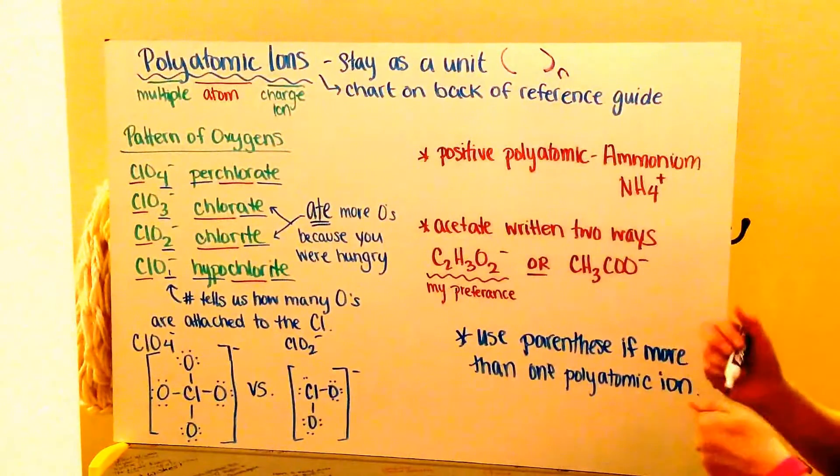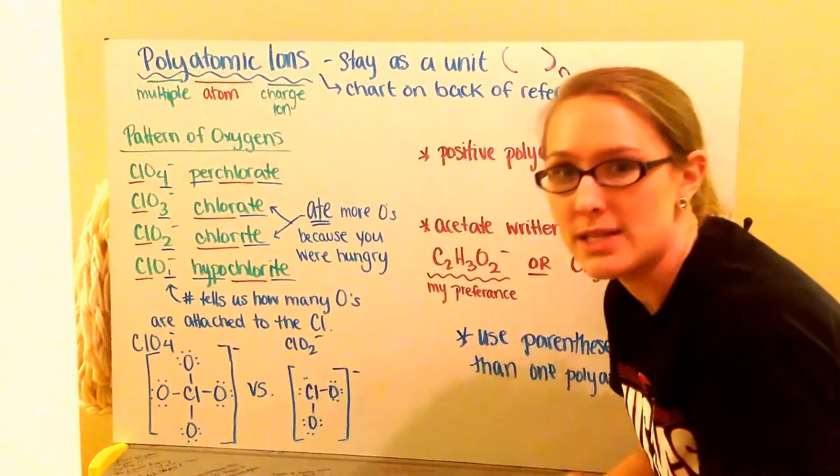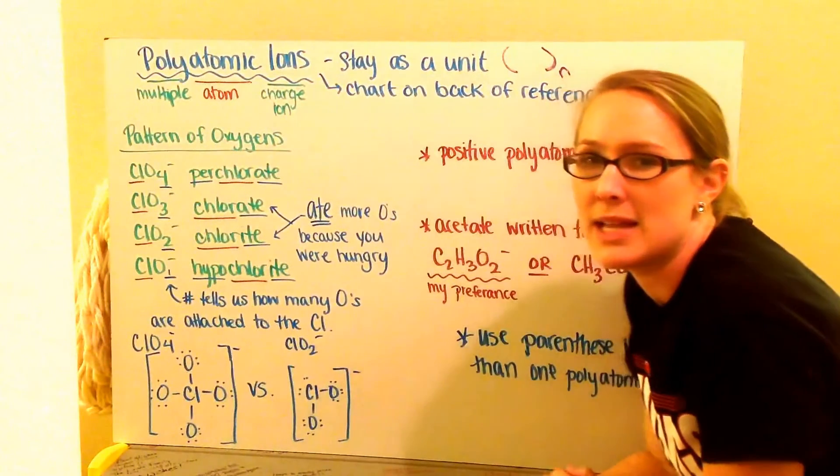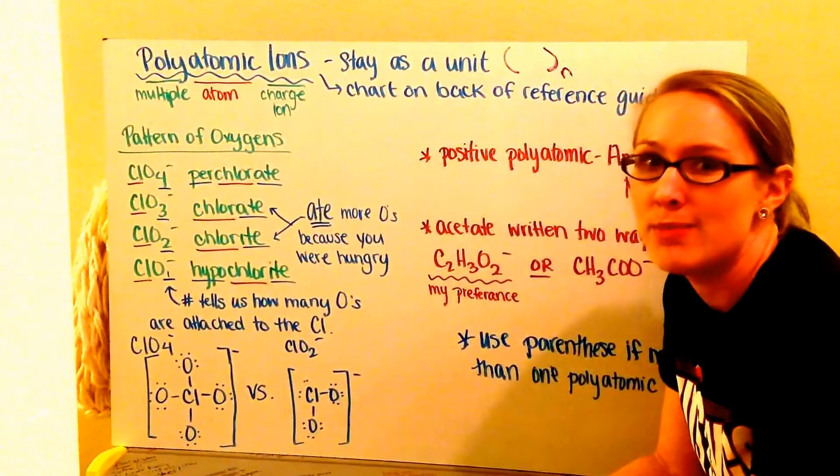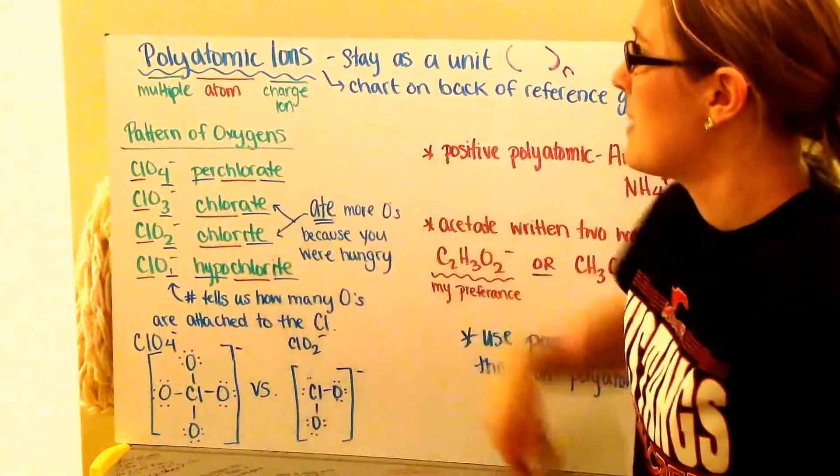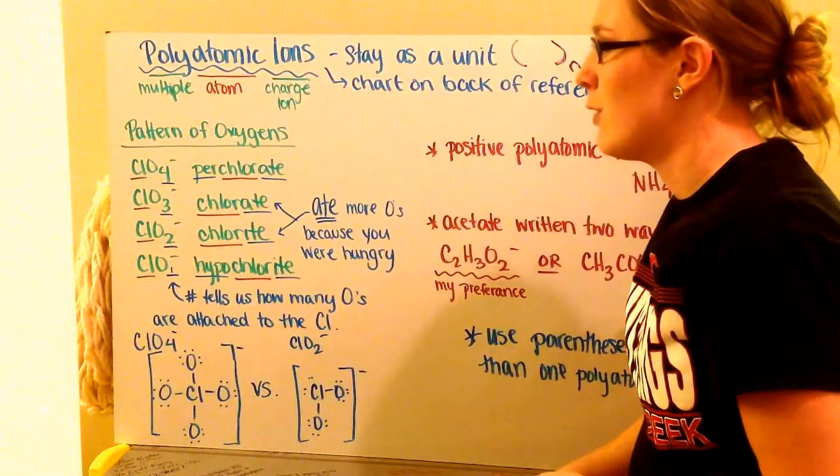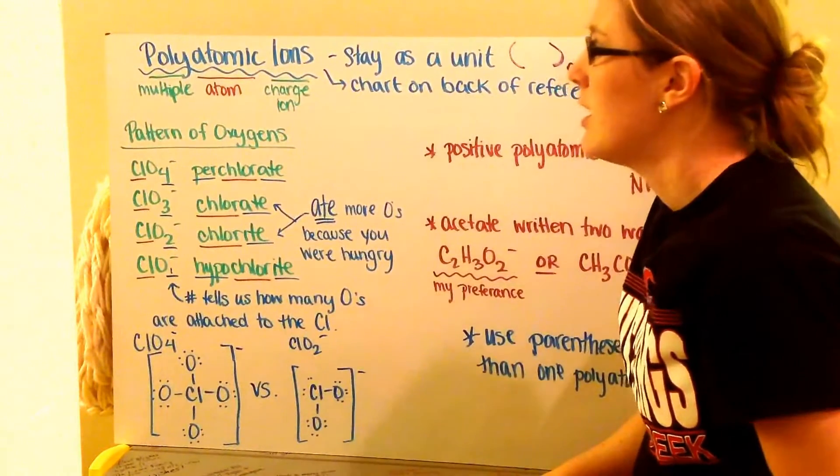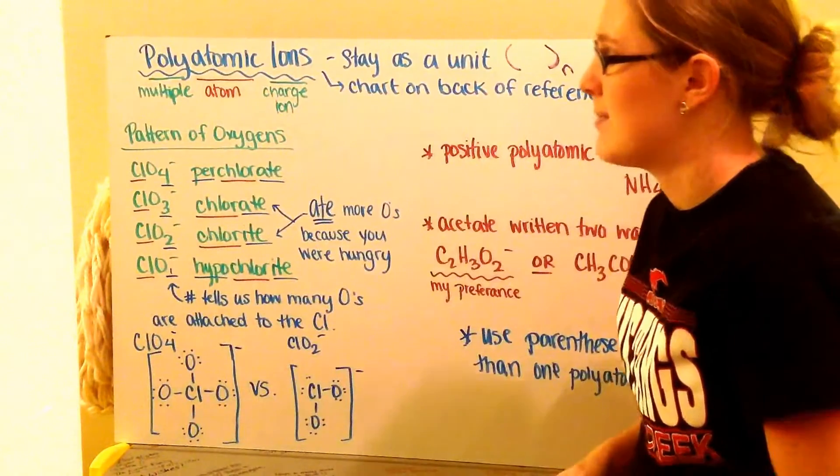And because of that we have to use parentheses around my polyatomic ion if I have more than one. So then I put my number that I have underneath. On the back of your reference guide, you have a list of all the different polyatomic ions that they can use on your final exam. We'll go over that in more detail in class.